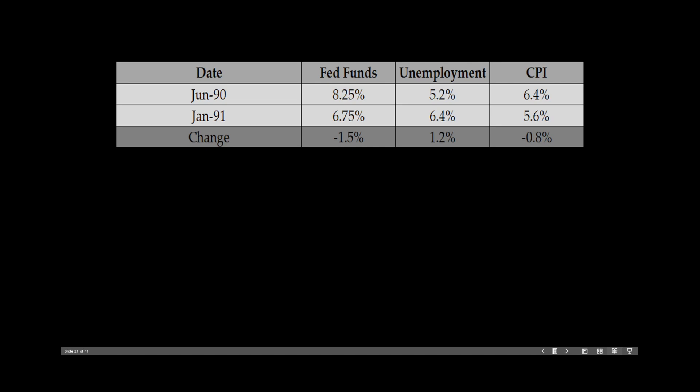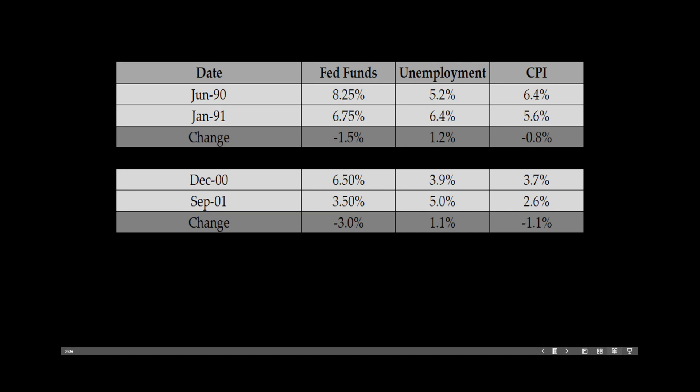The same pattern took place in 2000-2001: interest rates fell from 6.5% to 3.5%, the unemployment rate rose from 3.9% to 5.0%, and the Consumer Price Index fell from 3.7% to 2.6%. People who want to sell their homes have two motivations. First, interest rates are coming down, so they're not worried about rolling into a higher-rate mortgage. But second, there are signs the economy is slowing — unemployment going up, CPI going down. It's a push and a pull, so to speak.